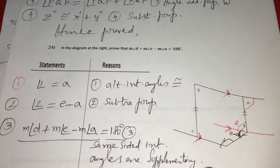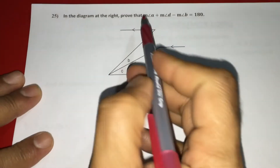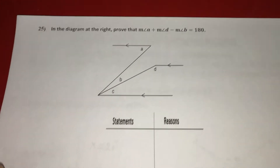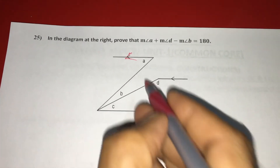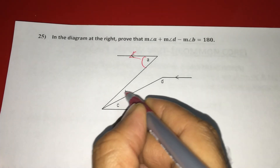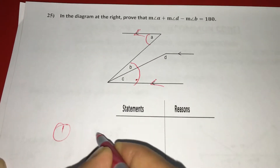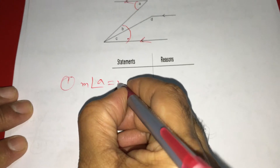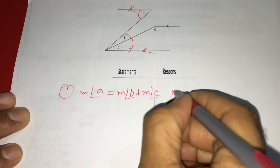Again, if you see the 25th one here, this is also just like that. What is it saying? Measure of A plus measure of D minus measure of B is 180. For that, first you have to see this line — this line is parallel to this line. Therefore, this angle and this angle are alternate interior angles. So, measure of angle A is measure of B plus measure of C.